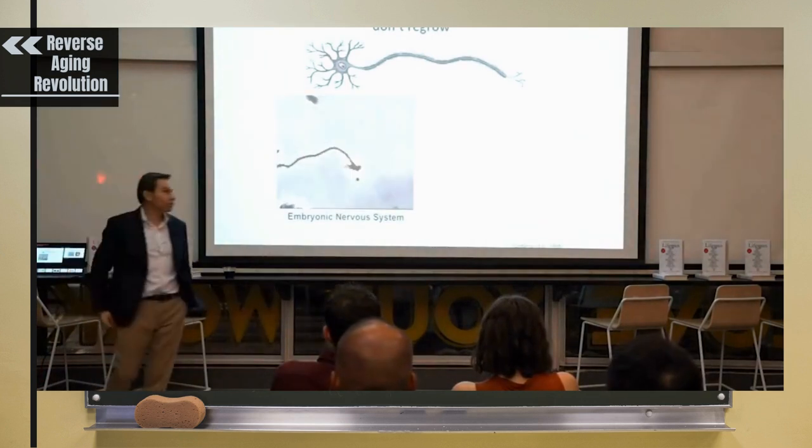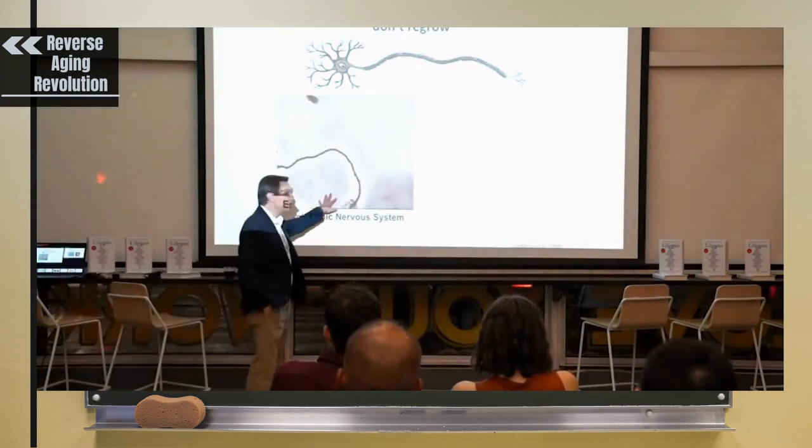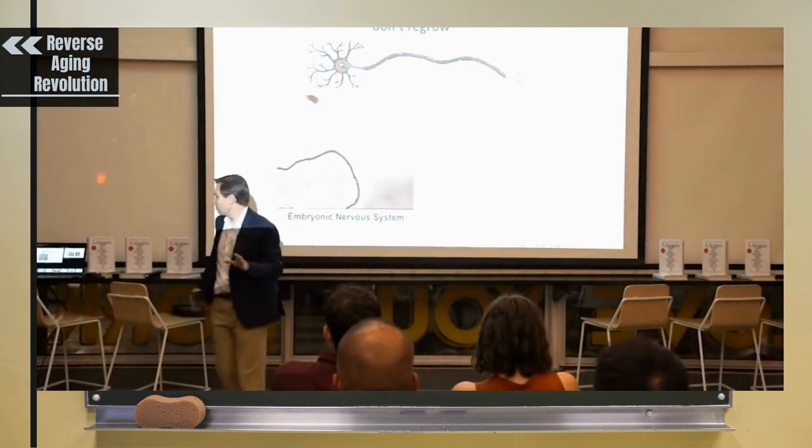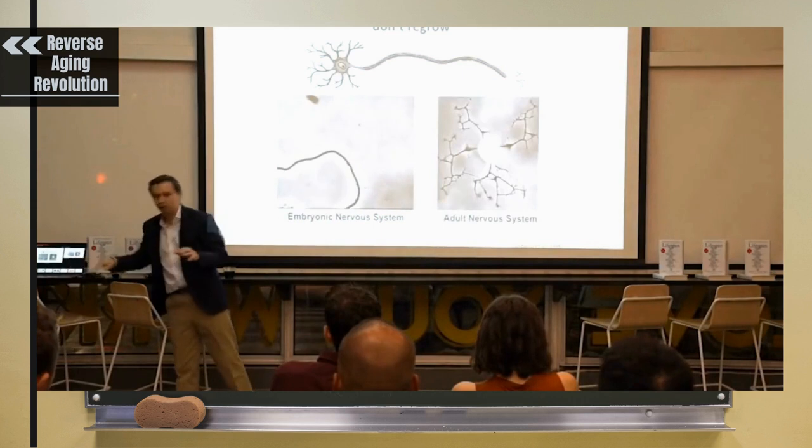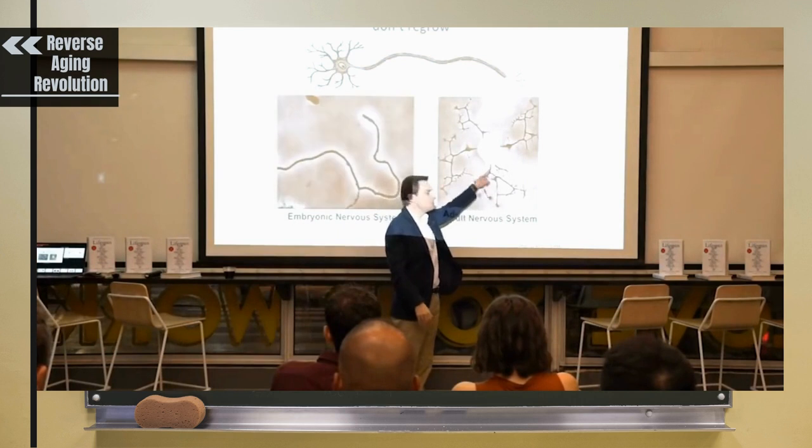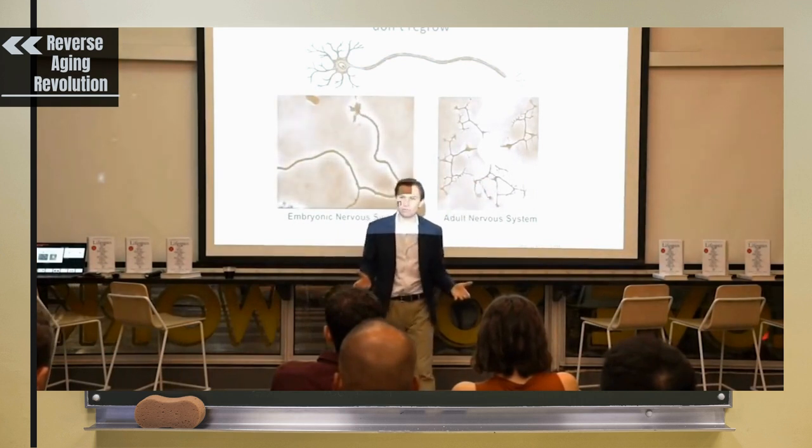And so this shows an embryonic nerve growing in the dish. That's great. But as we turn into adults, if you put one of our nerves in a dish, it'll just sit there. It'll try its best to grow, but it really won't grow very well.